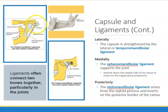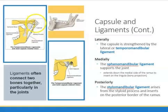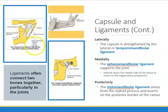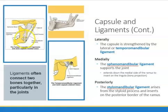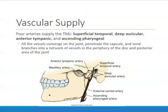The last ligament is the stylomandibular ligament. At the back of our head we have the styloid process — kind of like a stiletto heel that sticks out. This ligament attaches to the styloid process on one side and ends at the mandible on the other side — specifically at the posterior border of the ramus, at the very back of the ramus.